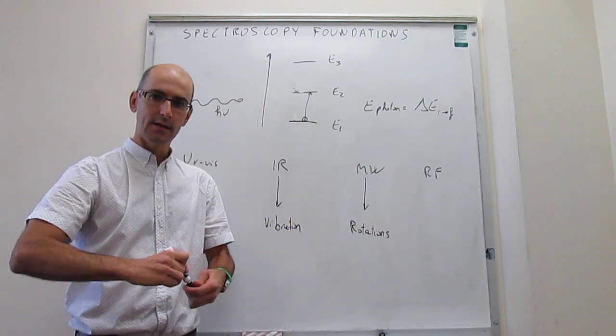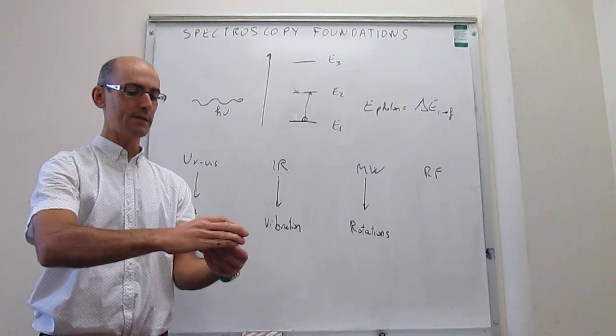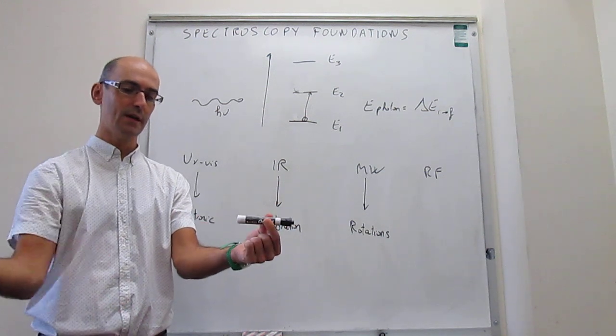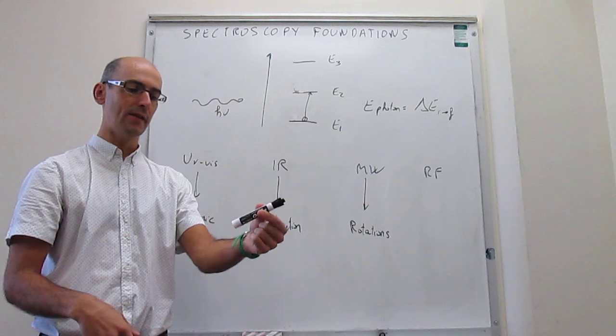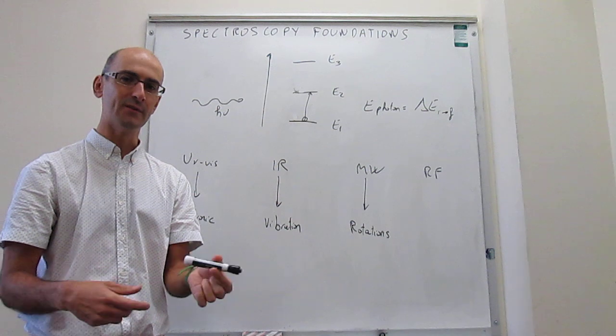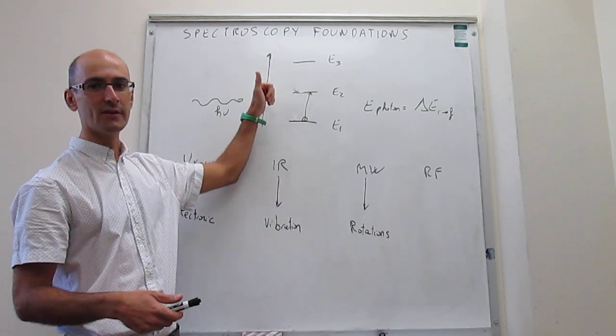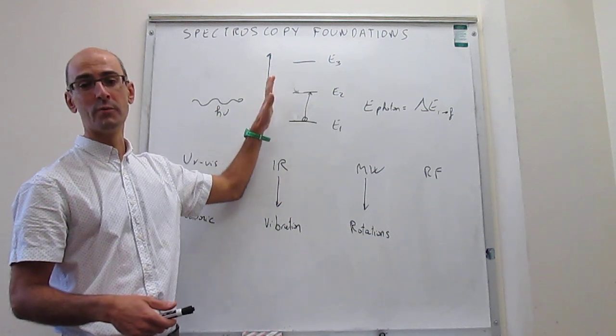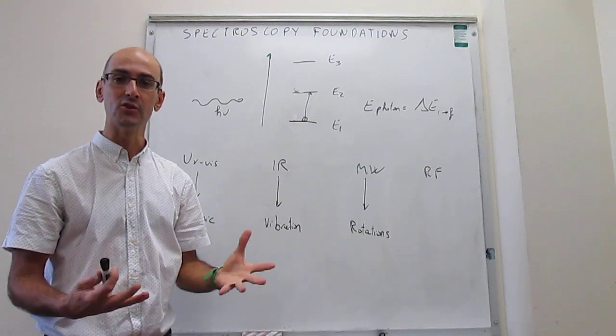So if you have a molecule in the gas phase, like this one, what will happen is that the molecule might be rotating or not, and then you shine a microwave photon, and then you can actually make it rotate. Those rotations are also quantized. So you're going to have a set of energy levels, and you're promoting the system between rotational energy levels.